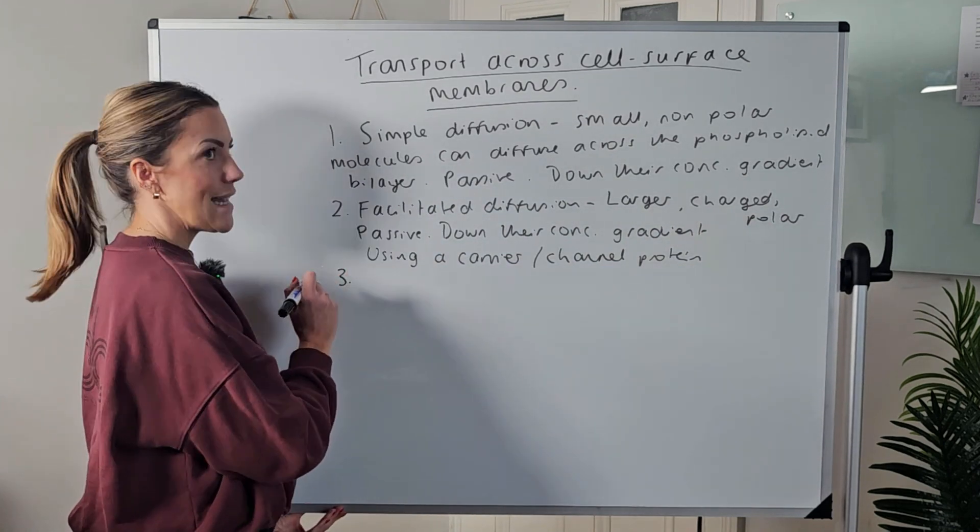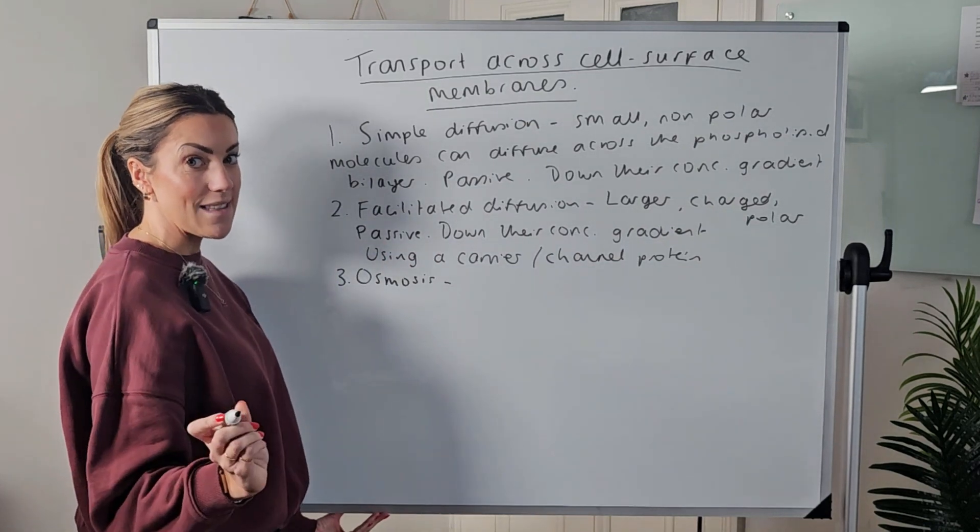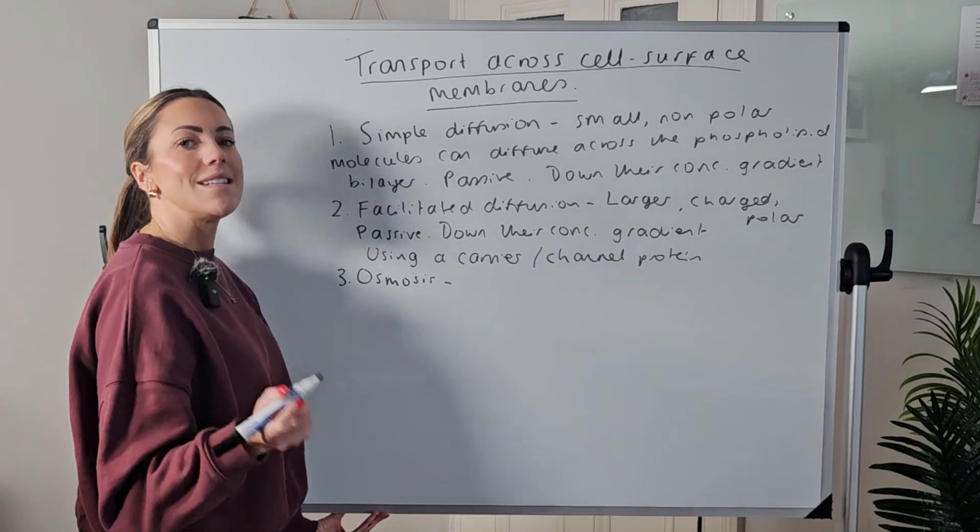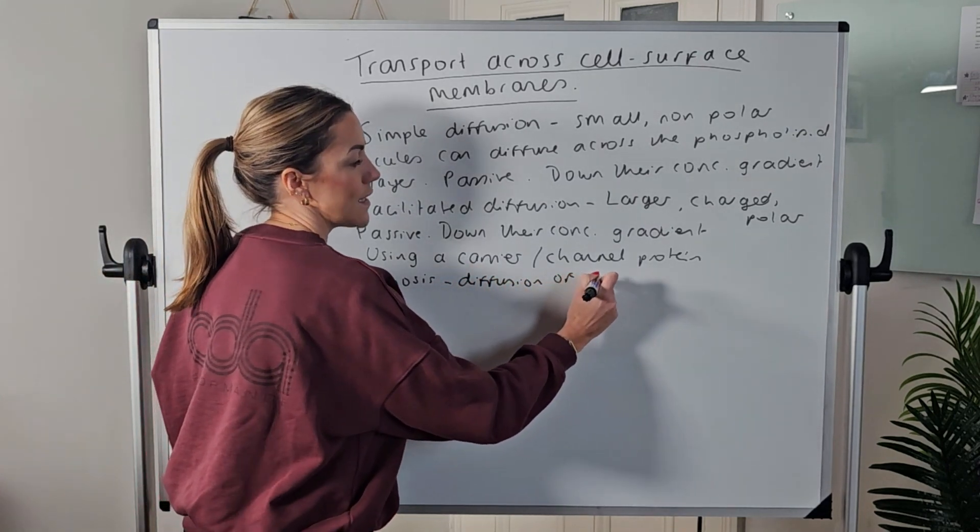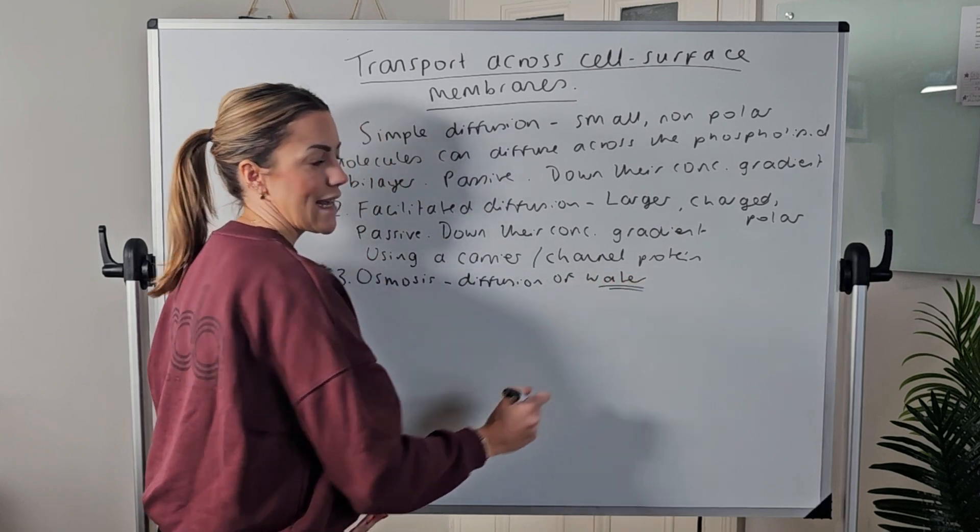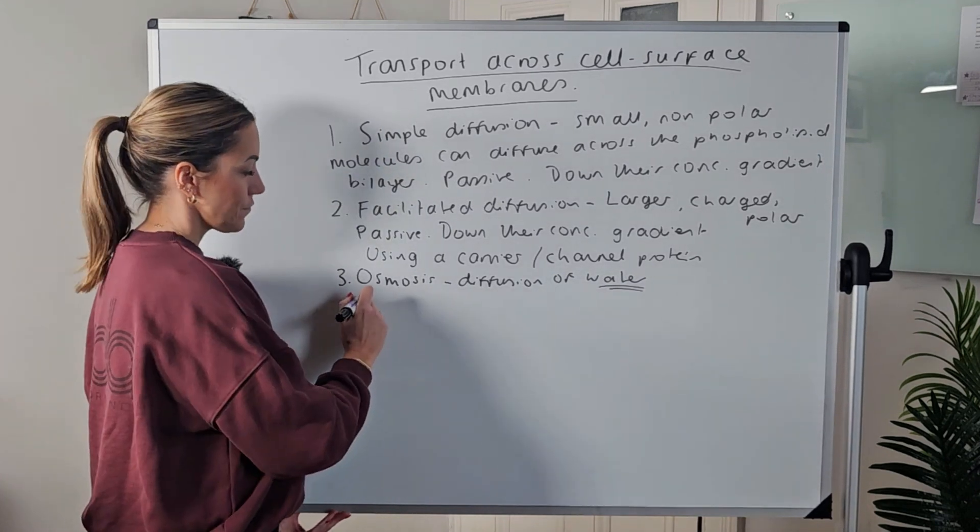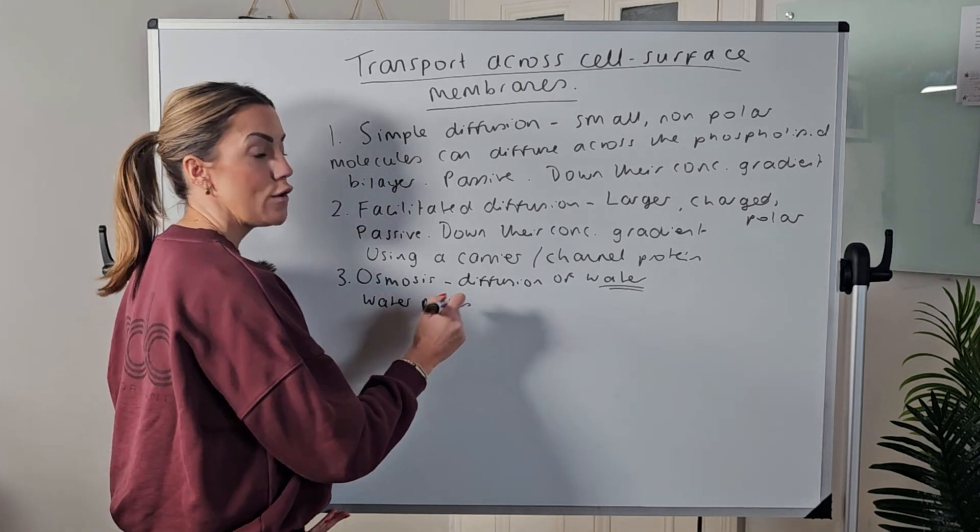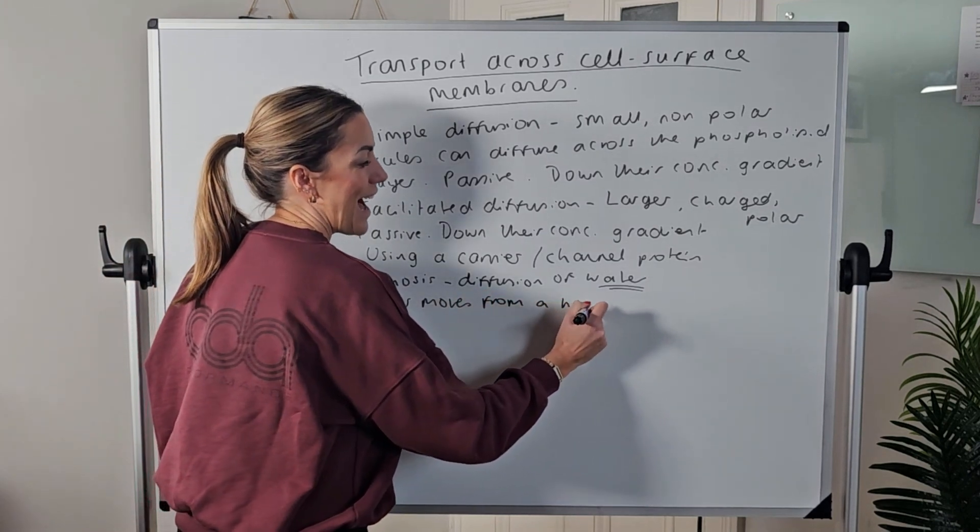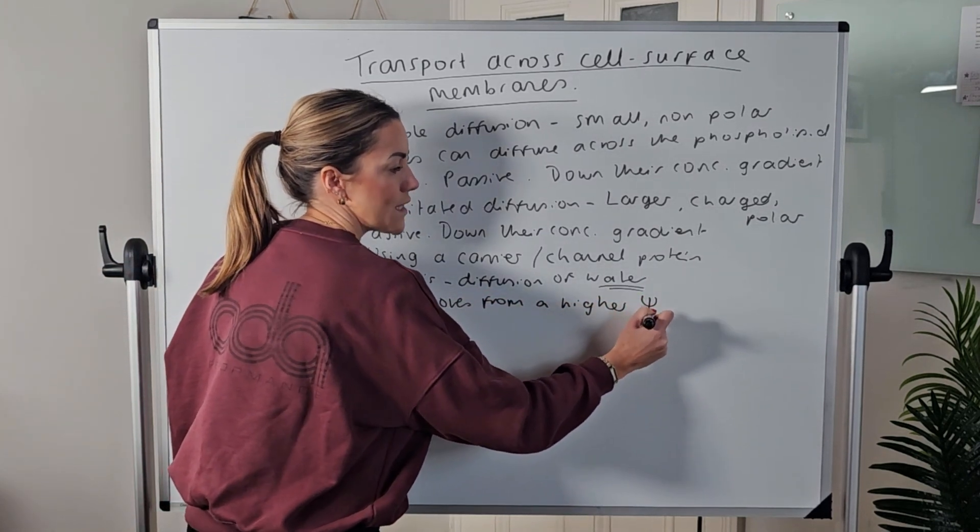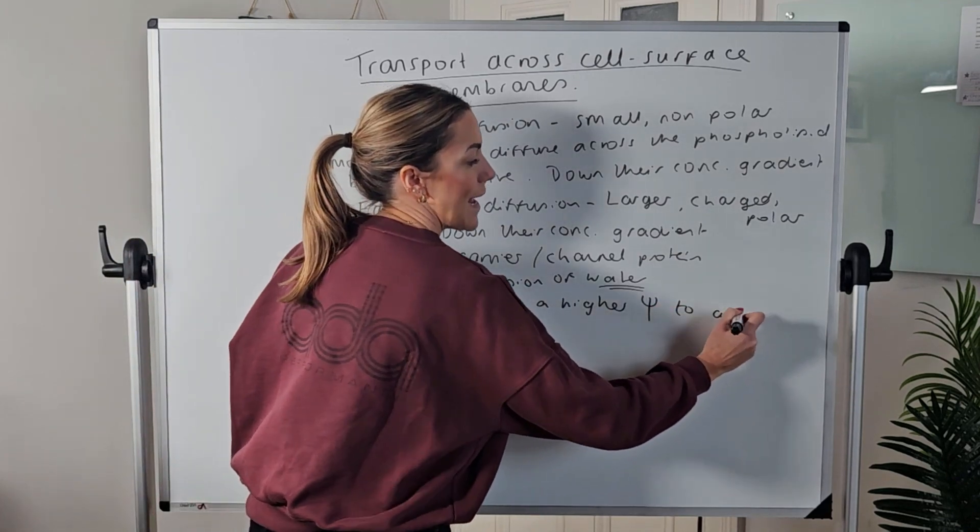Let's move on to osmosis - again it's one we did at GCSE, but we can use different vocabulary. Osmosis is the diffusion of water specifically, and instead of talking about a concentration gradient at A-level, we're going to say water moves or diffuses by osmosis from a higher water potential - that's the symbol for water potential which you can use - to a lower water potential.